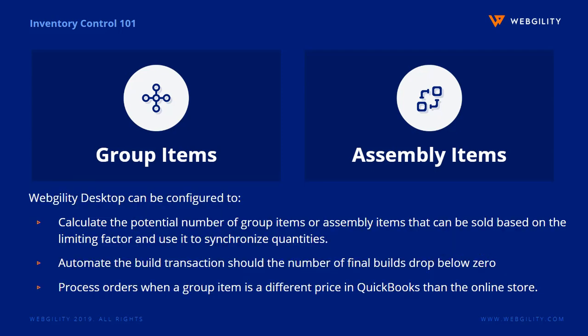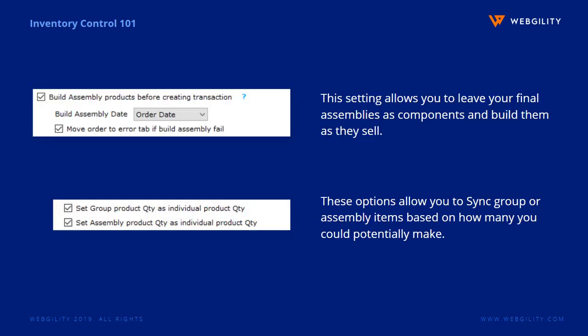With just a few minor configuration changes, Webgility Desktop solves for the issues both product types bring when selling online. Webgility Desktop can calculate the potential quantities for both assembly and group products based on the limiting component. It can also do the build transaction in QuickBooks, as well as use an adjustment item to sell a group product for a different price than what QuickBooks has. Within the transaction configuration area, there are options to have Webgility Desktop create a final assembly when an order is posted to QuickBooks, and within the product configuration, you can select to use the potential amount for syncing quantities for group and assembly products.